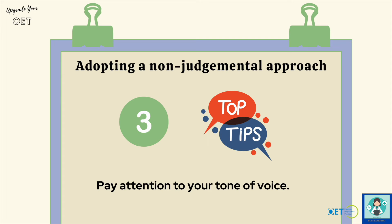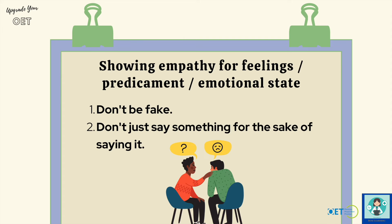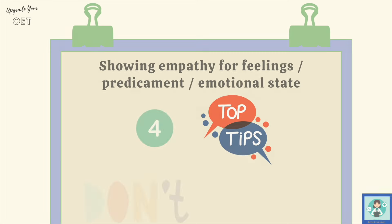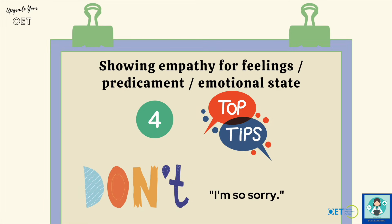The last indicator is your ability to show empathy for feelings, predicament, or emotional state. As a teacher, I've noticed that so often what students say sounds fake — so be really careful. Don't be fake. Don't just say something for the sake of saying it. I'm actually going to tell you: don't say 'I'm so sorry.' I've heard this so many times and it just falls flat, because quite often you're not really sorry — you just want to help them get better. Don't say something unless you really can show it in your voice and genuinely feel bad for them.